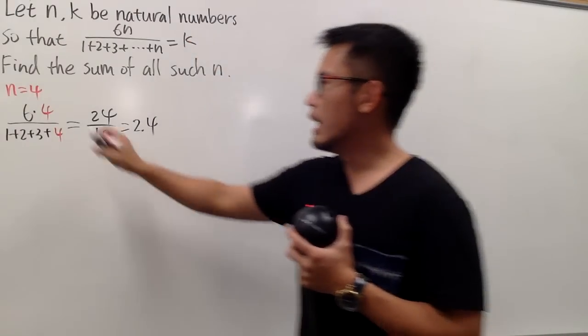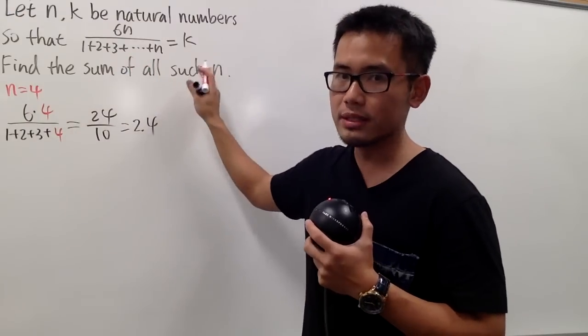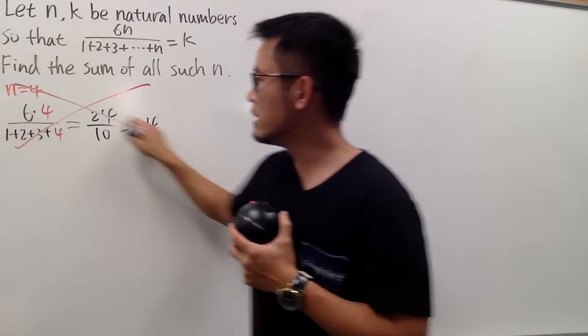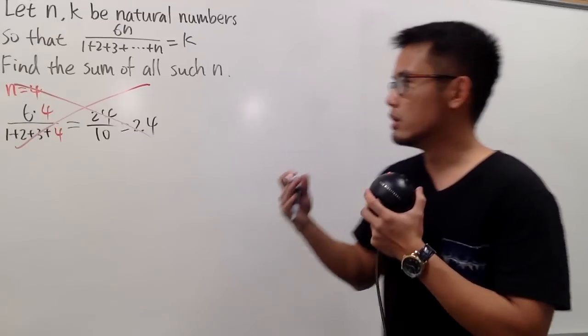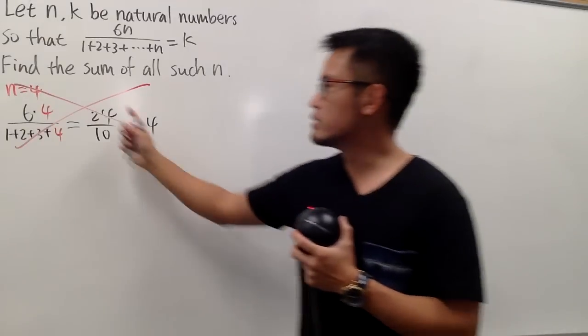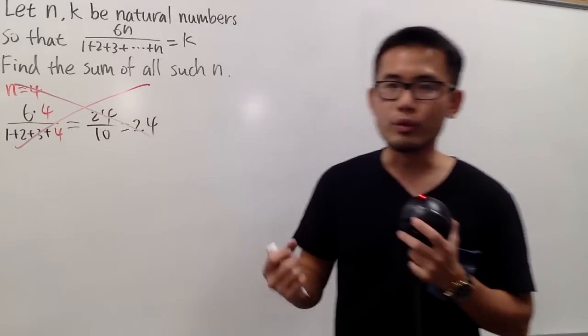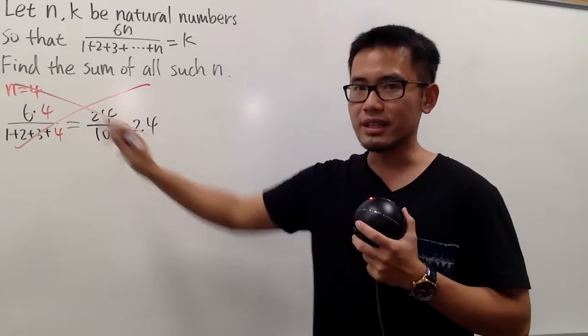So n equals 4, it's not one of the choices. I want to see how we can get all the good choices for n so that this right here actually ends up to be a whole number. n equals 4 doesn't work.